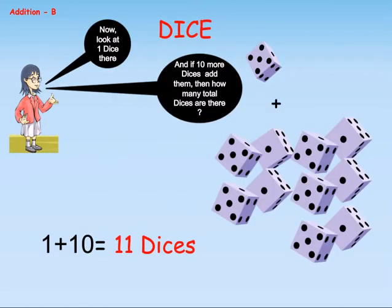Now look at 1 dice there, and if 10 more dice add them, then how many total dice are there? Well, 1 plus 10 is equal to 11 dice.